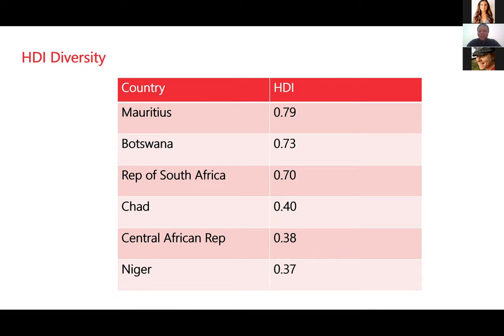If you look at development, we have what we call the HDI — the Human Development Index. It's a combination of income, healthcare, and education. It ranges from zero to one. On the African continent, Mauritius is 0.79, which is very developed. Canada is normally around 0.92 to 0.95. Botswana is 0.73, the Republic of South Africa is 0.7. At the bottom, you have countries like Chad at 0.4, Central African Republic at 0.38, and Niger at 0.33. So you can see a lot of diversity right there.